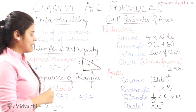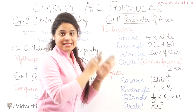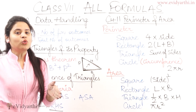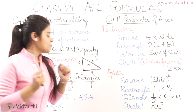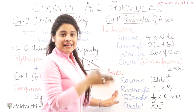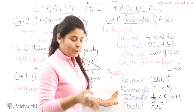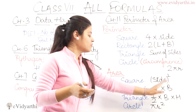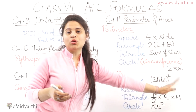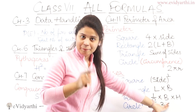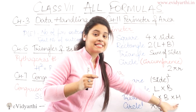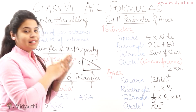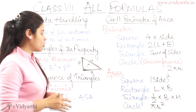Then we have the areas. Area of a square is side squared — side into side. Then we have rectangle, which will be length into breadth. Then we have triangle: half base into height. B stands for base and H stands for height, so area of triangle is ½ × base × height.